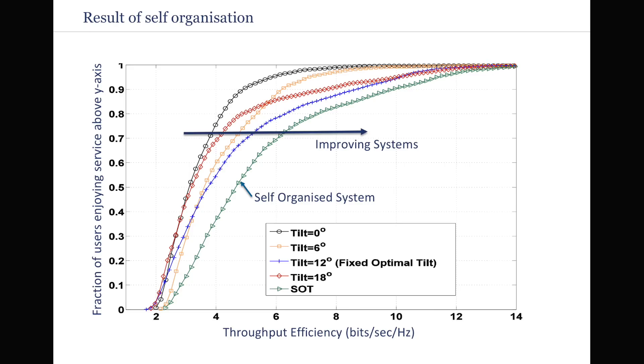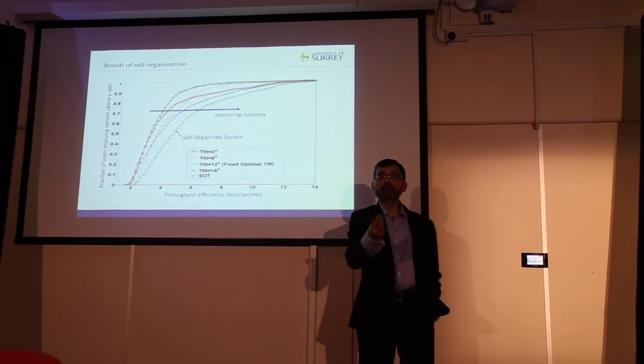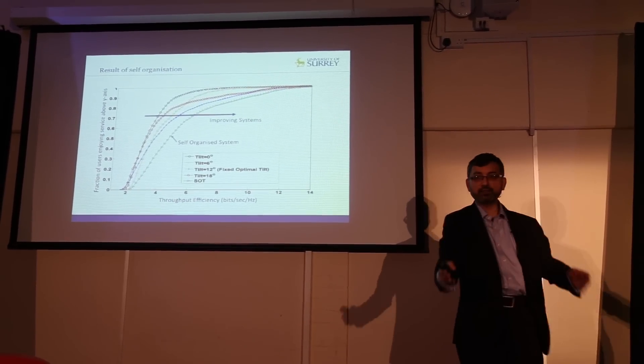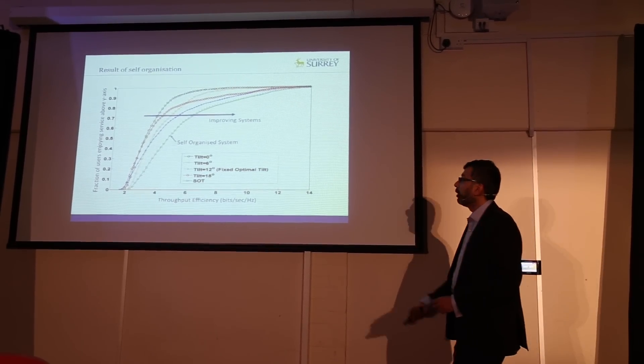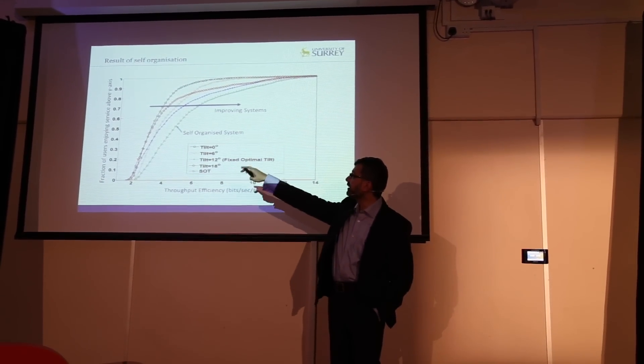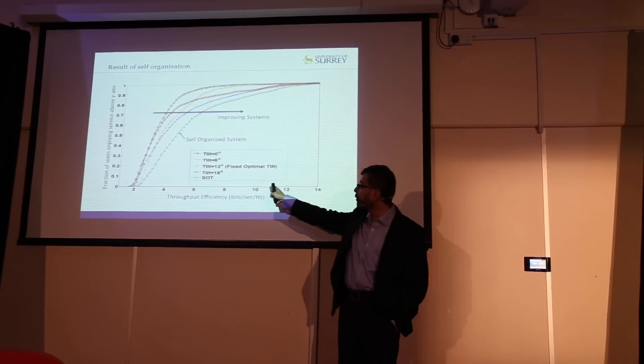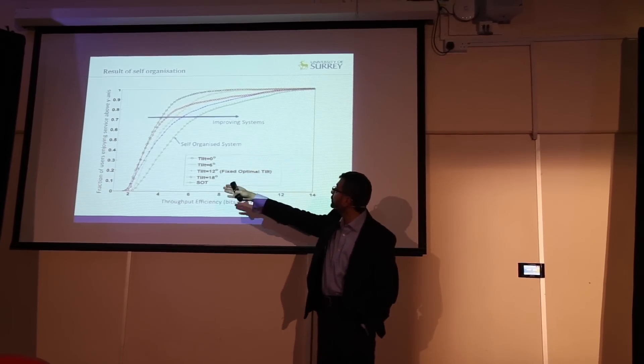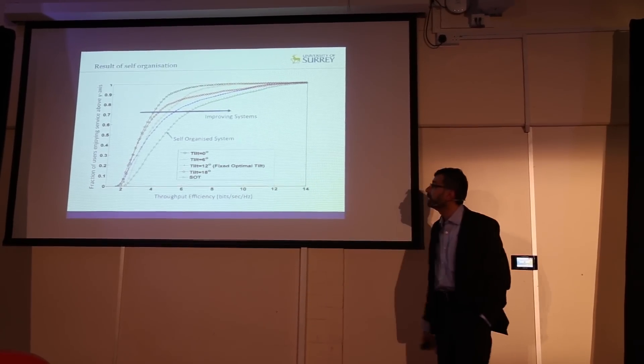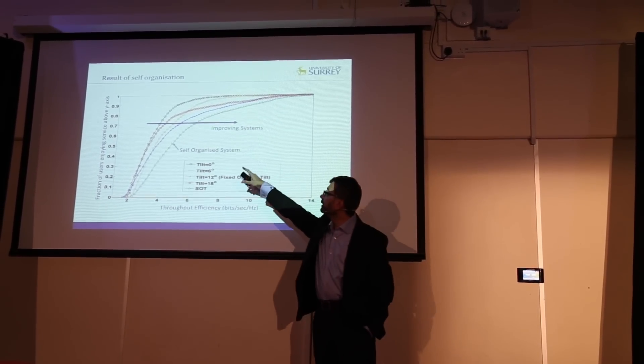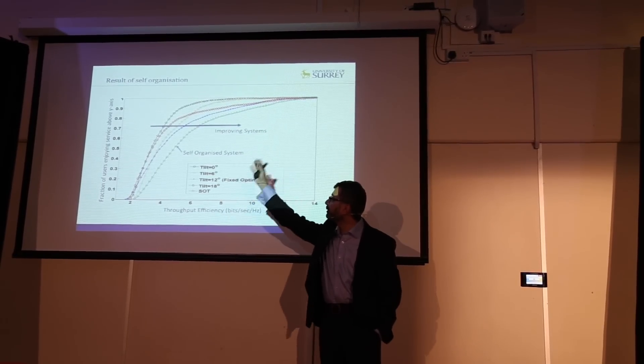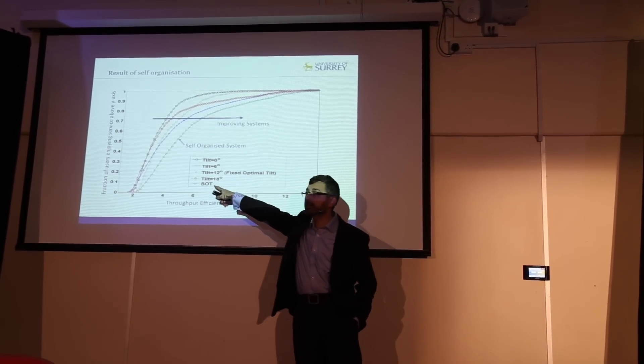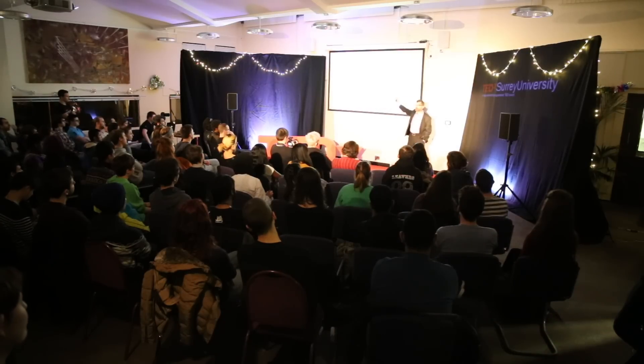Just one graph, not too scientific. Don't worry about the details on the graph. What we want to show: does it work? On the x-axis, you have throughput efficiency. In simple words, it tells us how fast the data is transmitted for the given bandwidth that we are given. On the y-axis, we show the so-called CDF, which tells us what fraction of users is enjoying a good service. A system which is towards the right hand side, any graph which is as right as possible will be a good system. You can see if we fix the antenna tilts, the performance is mediocre, acceptable. But if we do self-organization of the tilts, then we get the best performance that we have.